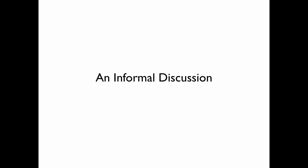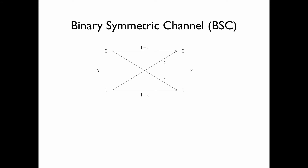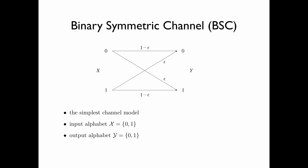We start with an informal discussion. First, let us take a look at the binary symmetric channel, or BSC. The BSC is the simplest channel model, with input alphabet x equals {0, 1} and output alphabet y equals {0, 1}. The parameter specifying the BSC, epsilon, is called the crossover probability.